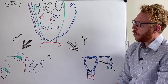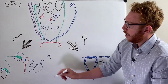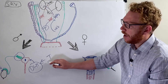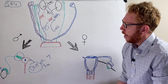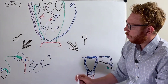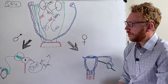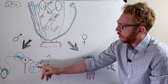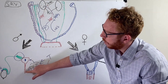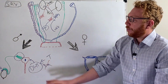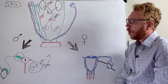DHT acts on the urogenital sinus to develop the prostate and penile urethra. If there is dysfunction with the conversion of testosterone to DHT — that is, if the 5-alpha reductase enzyme doesn't work — DHT is not made and there can be dysfunction in this production. This is particularly important when we consider the external genitalia, which we'll cover on the other side of the whiteboard.